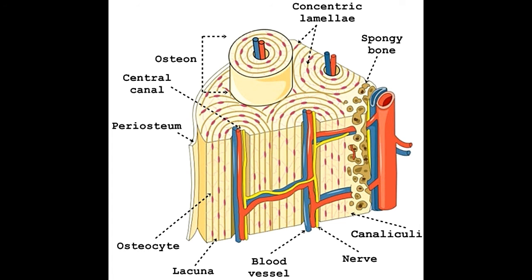On a concluding note, the Haversian system or the osteon plays a vital role, as it facilitates the supply of oxygenated blood and nutrients to the bones. Moreover, the network of canaliculi also facilitates the passage of substances between the blood vessels and the mature bone cells.